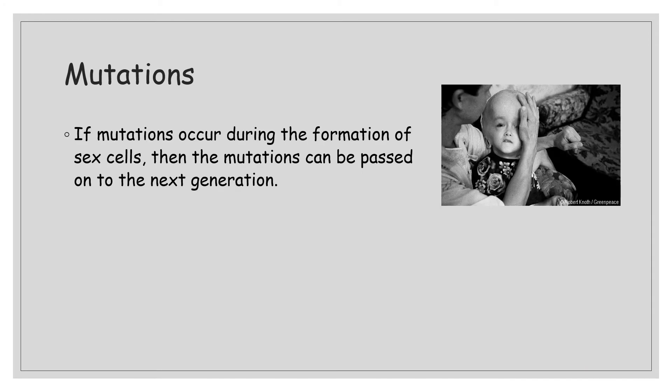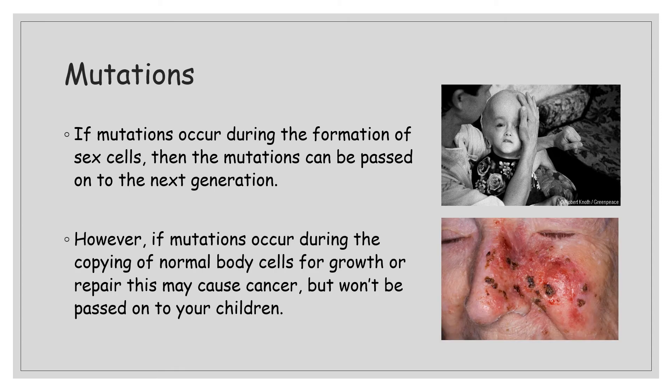If mutations occur during the formation of sex cells, they can be passed on to the next generation. That's one reason why people — particularly females — protect themselves when administering X-rays. Females are born with all the eggs they'll ever carry, so they need to protect those eggs from mutagens, as that could cause problems for their offspring. If mutations occur during the copying of normal body cells for growth or repair, that might cause cancer — but that cannot be passed on to children. Mutations are responsible for bringing new alleles into the genome of any organism.